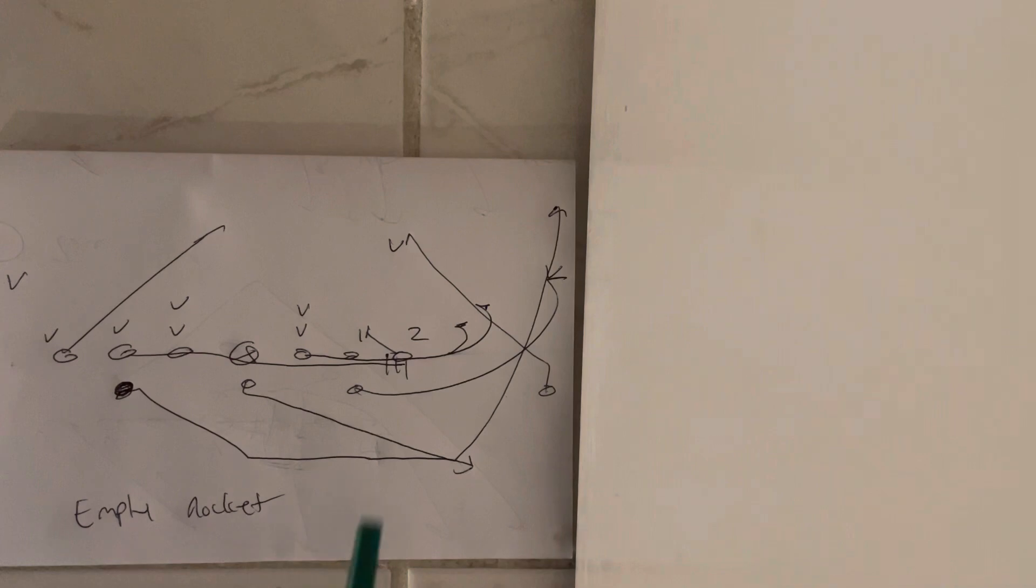He would take three steps up the field and crack the safety. The receiver would block down. The guard and tackle would pull out. They'd block the two widest people that show. Center and the back side would scoop. They would sprint behind the receiver to cancel the adjacent gaps. Backside receiver would cut off.